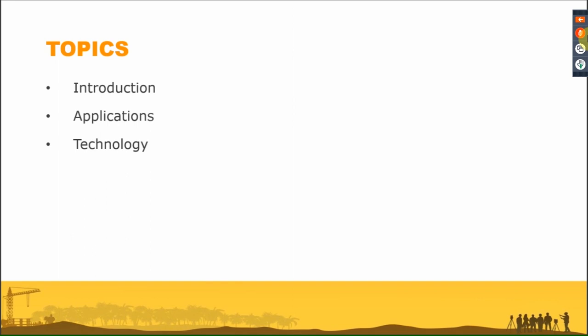We'll see what these technologies are used for — to find, follow, and measure precisely the center of the prism. Then we'll discuss accuracy, which is an interesting topic. We always speak about one-second, two-second, five-second total stations, but what is the real accuracy in millimeters? At the end, when we measure, we evaluate accuracy in millimeters, not in seconds. There are more factors to consider with a robotic total station than with a manual one.